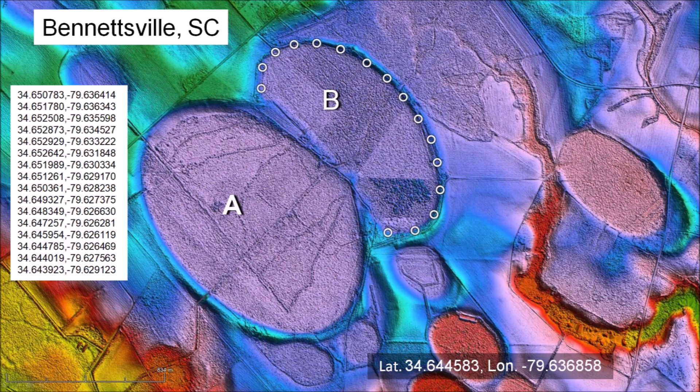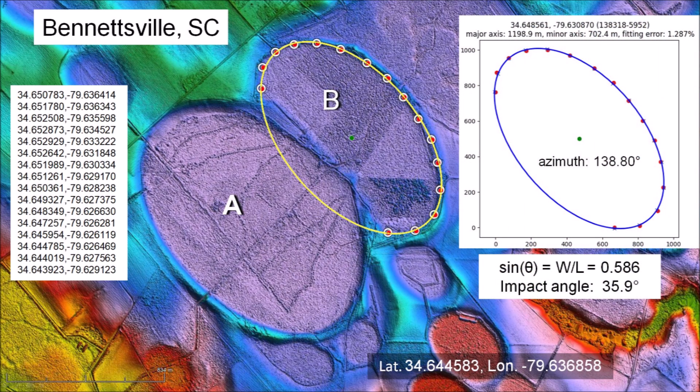We follow the same procedure of selecting points along the perimeter of basin B. Only five points are needed to fit an ellipse, but we have many more. The ellipse fits very well through the points. The ellipse fitting program makes it possible to determine the width of this basin. The width-to-length ratio of basin B corresponds to an impact angle of 35.9 degrees.